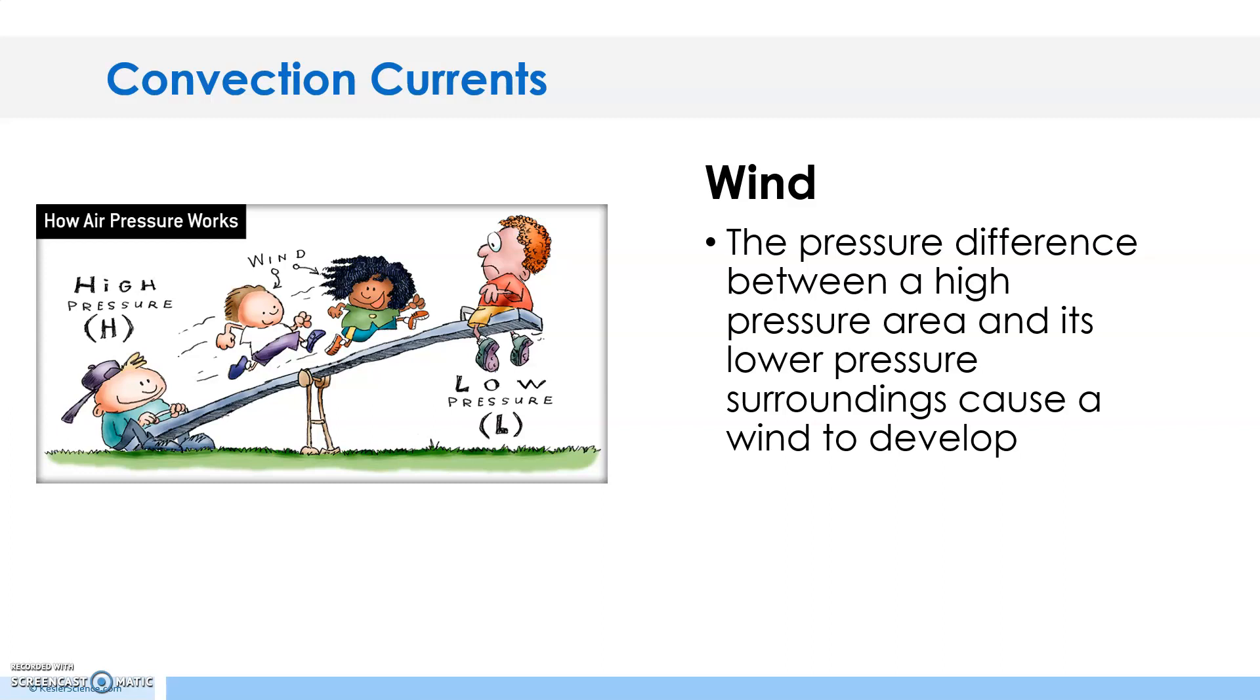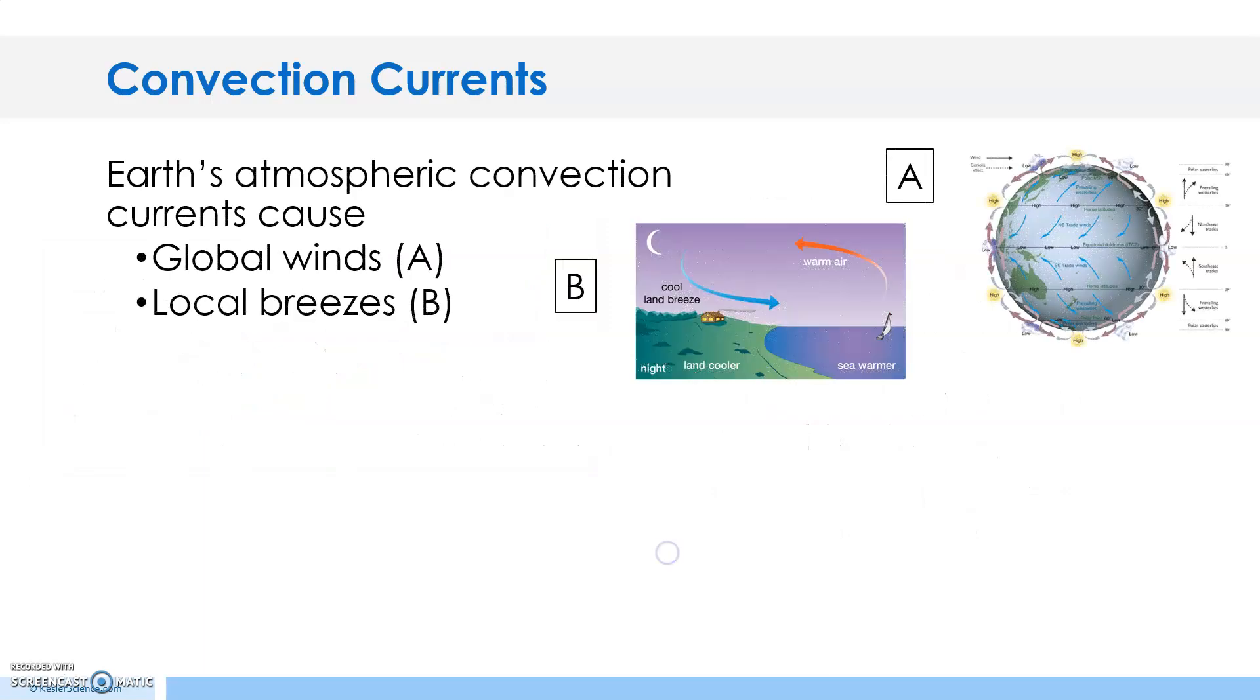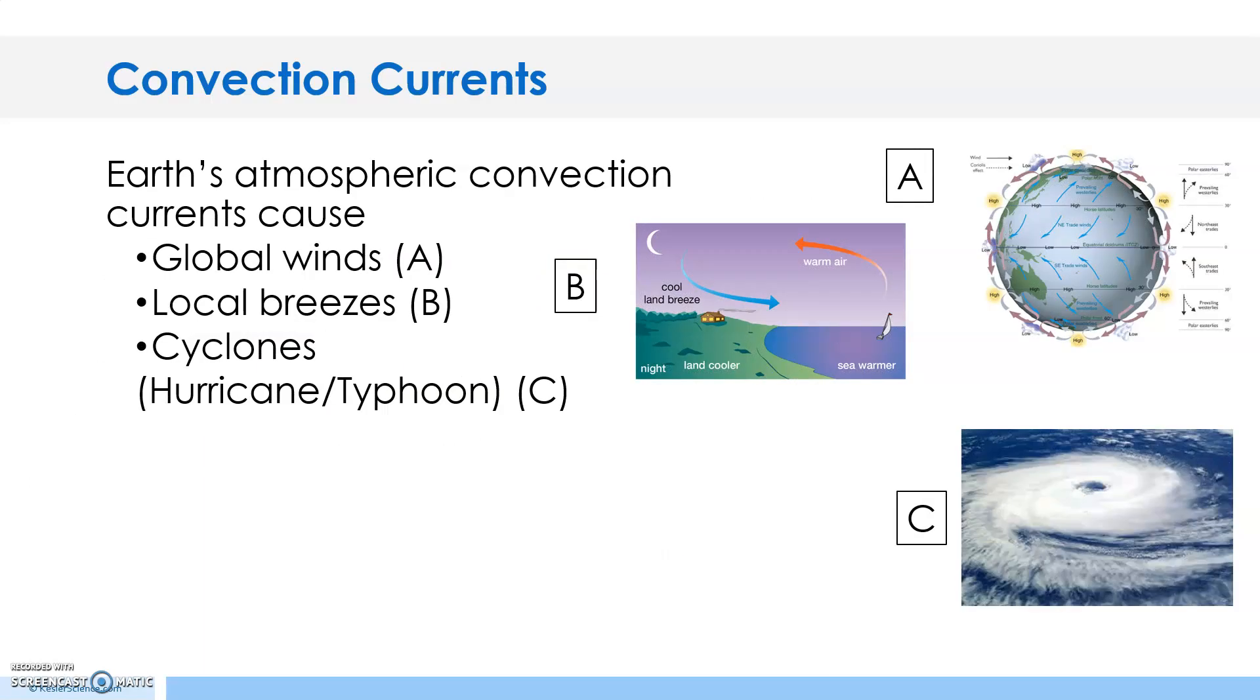Convection currents also produce winds. The pressure difference between a high pressure area and its low pressure surroundings causes a wind to develop. It flows from higher to lower pressure. Earth's atmospheric convection currents cause...